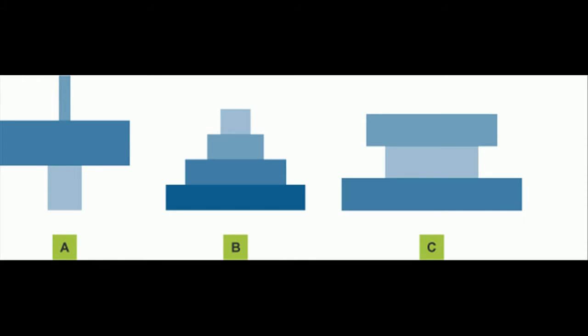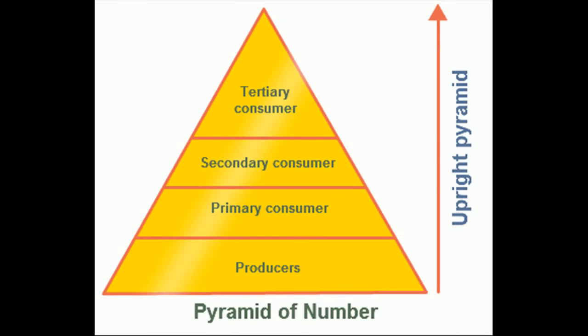The Pyramid of Numbers has three different types of pyramid styles. Can you name all three and explain them? In a number pyramid, is it possible for the producers to have a lesser number of individuals than primary consumers? Is it also possible to have more tertiary consumers than all of the other trophic levels?